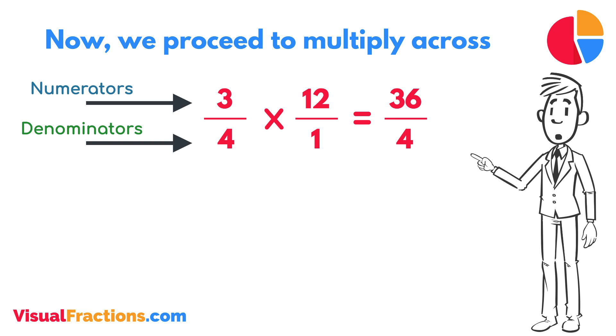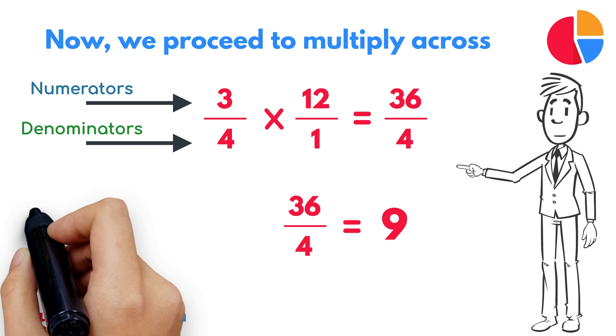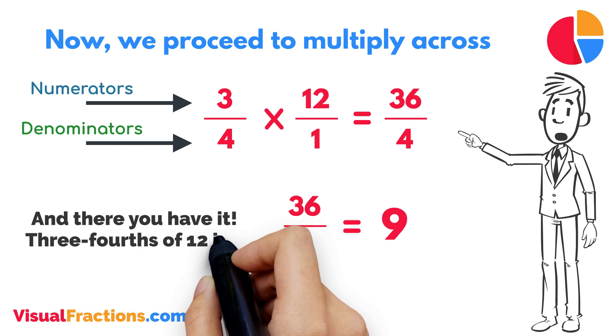To find the final answer, divide the numerator by the denominator. So, 36 divided by 4 equals 9. And there you have it, 3 fourths of 12 is 9.